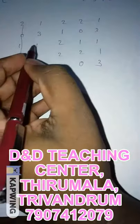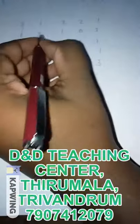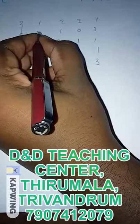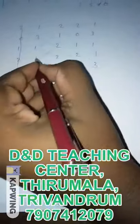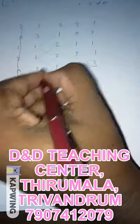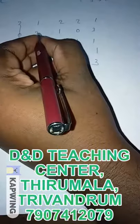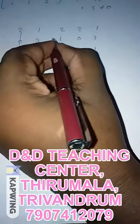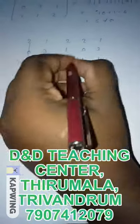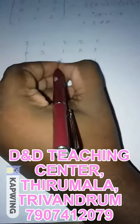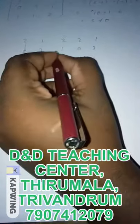Then cancel out the first column and the first row. Then find the determinants of the remaining square matrices like this. First, find the determinant of this 2x2 matrix. That is 3 into 2 equals 6, minus 1, equals 5.